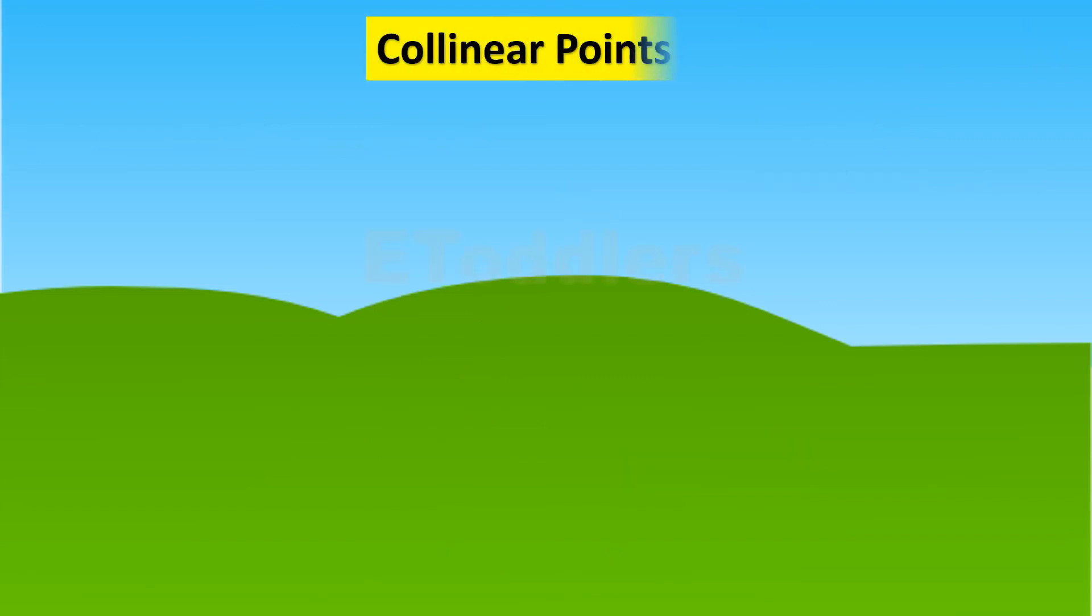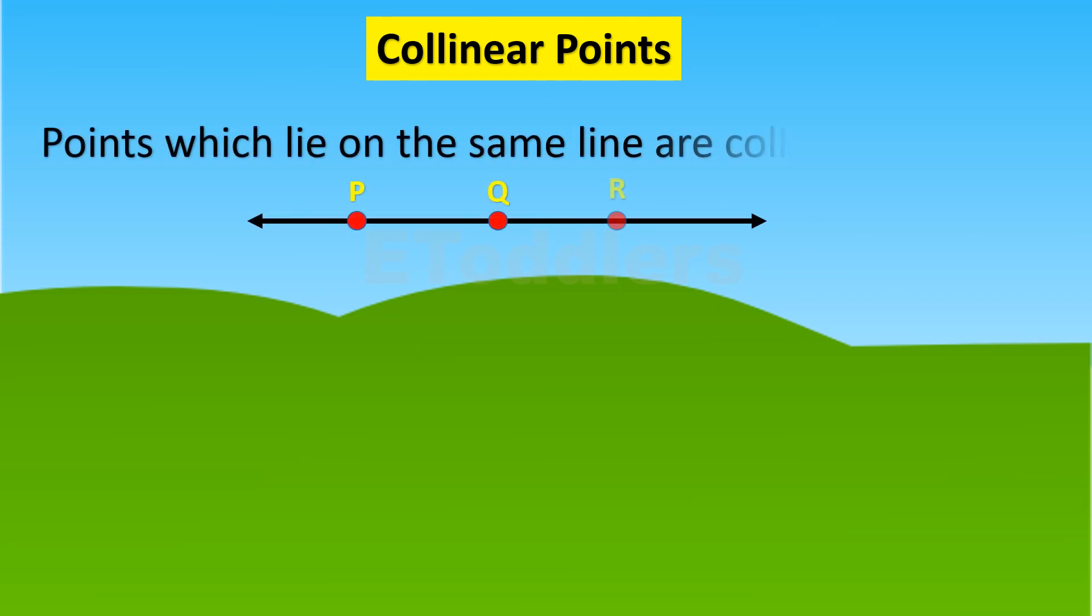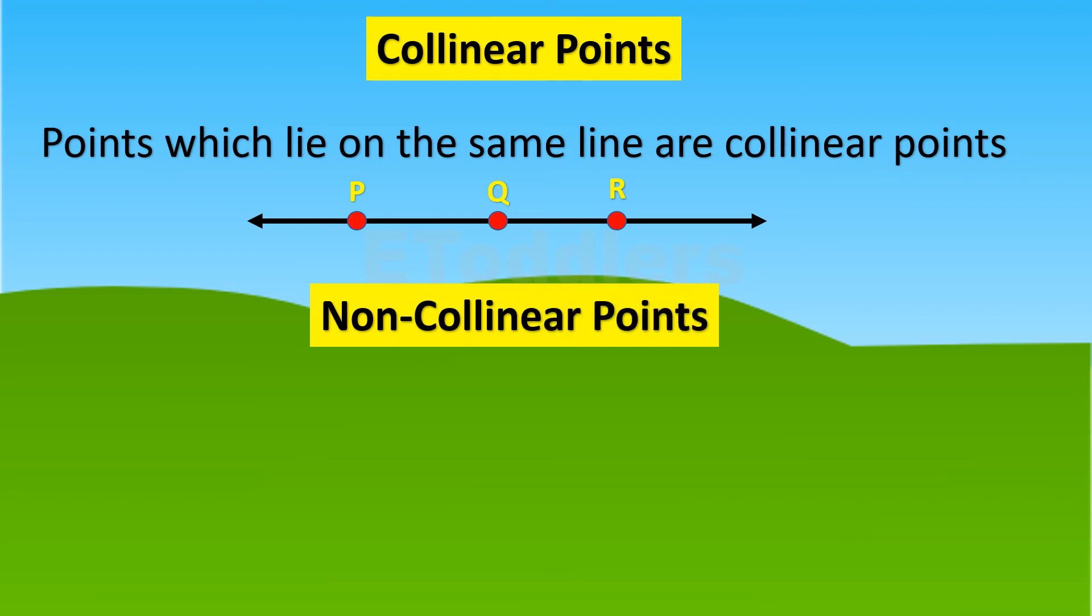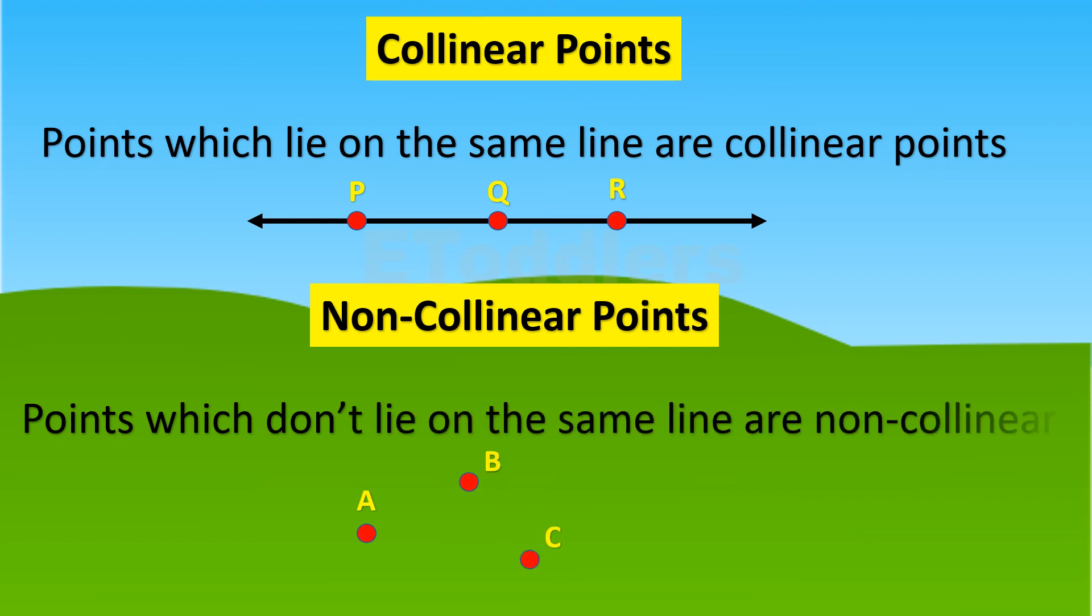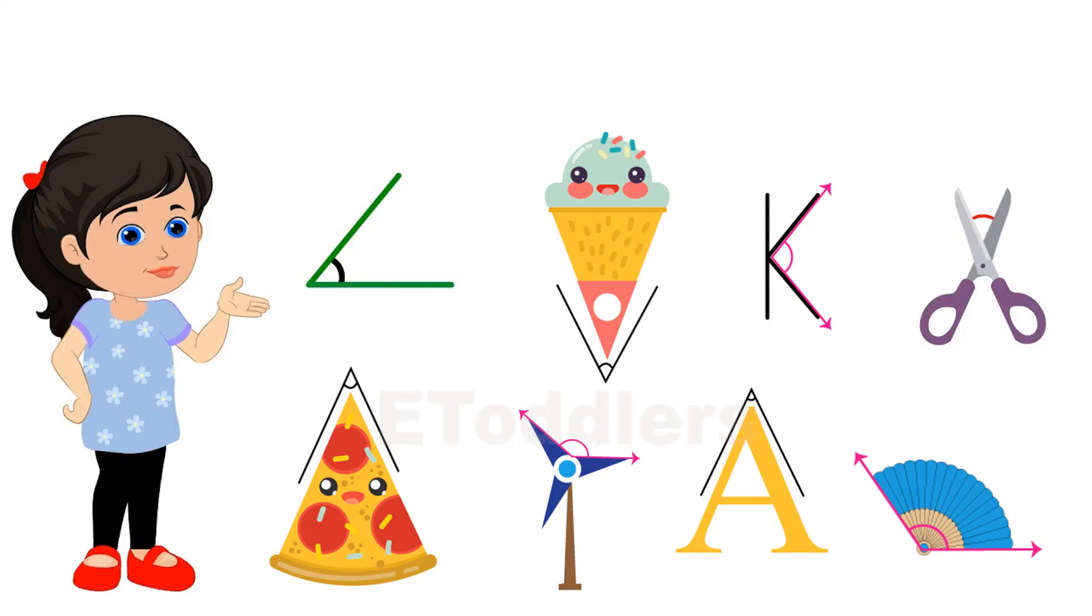Collinear points: points which lie on the same line are collinear points. Non-collinear points: points which don't lie on the same line are non-collinear points. Here are some examples of angles found on objects.